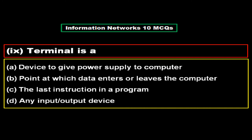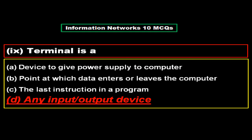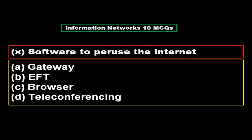Terminal is: option A a device to give power supply to the computer, option B the point at which data enters or leaves the computer, option C the last instruction in the program, option D any input/output device. The right answer is option D, any input and output device.